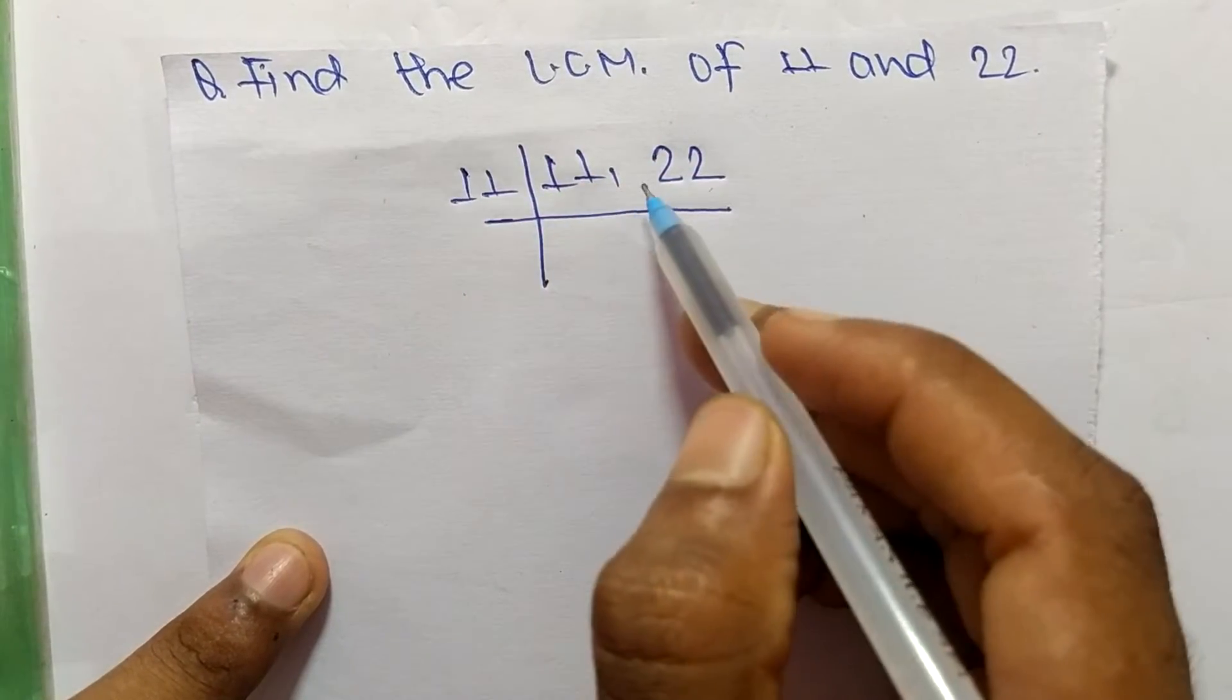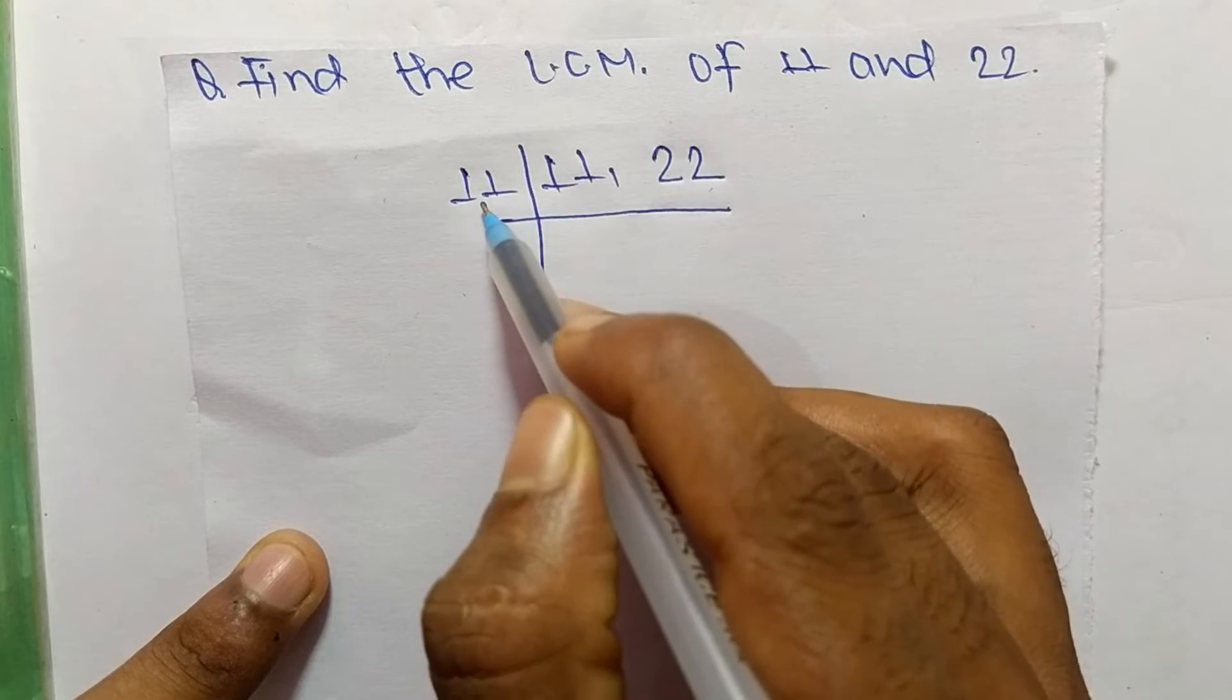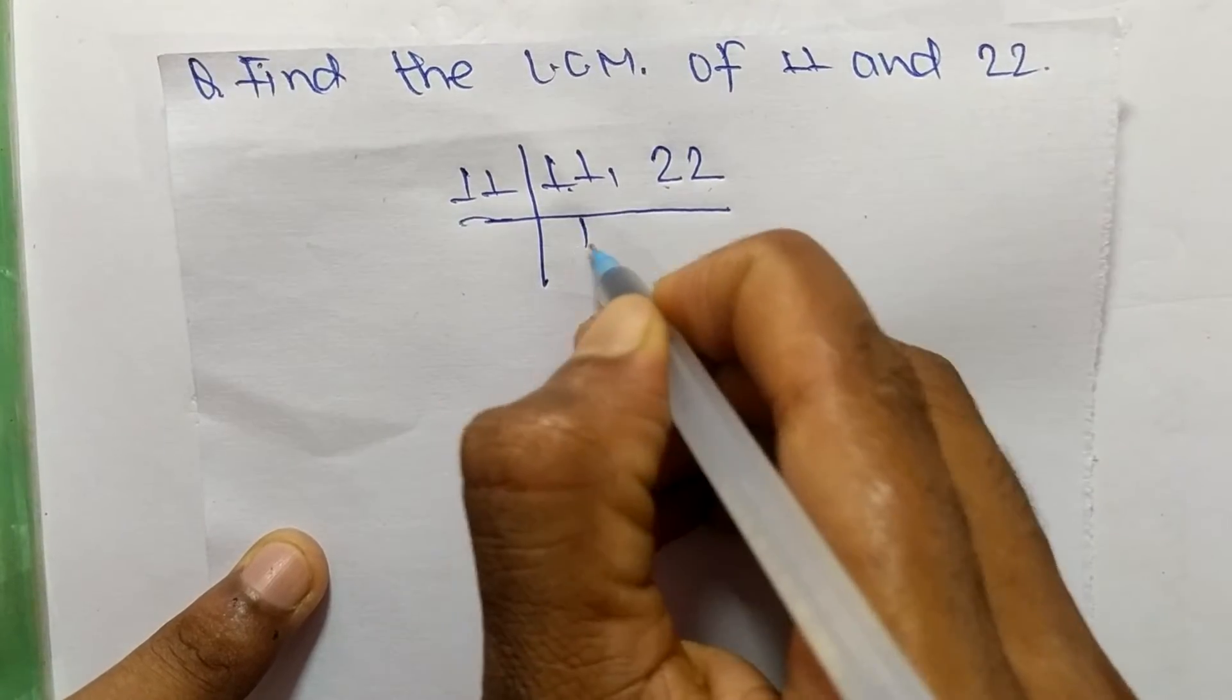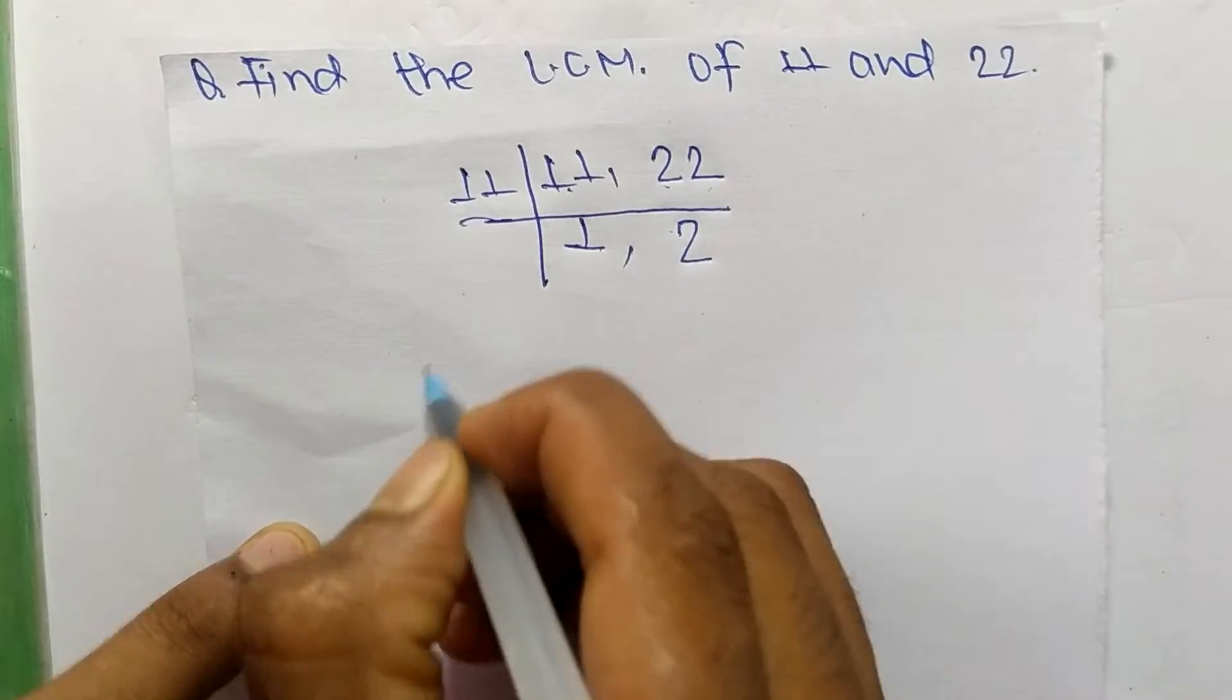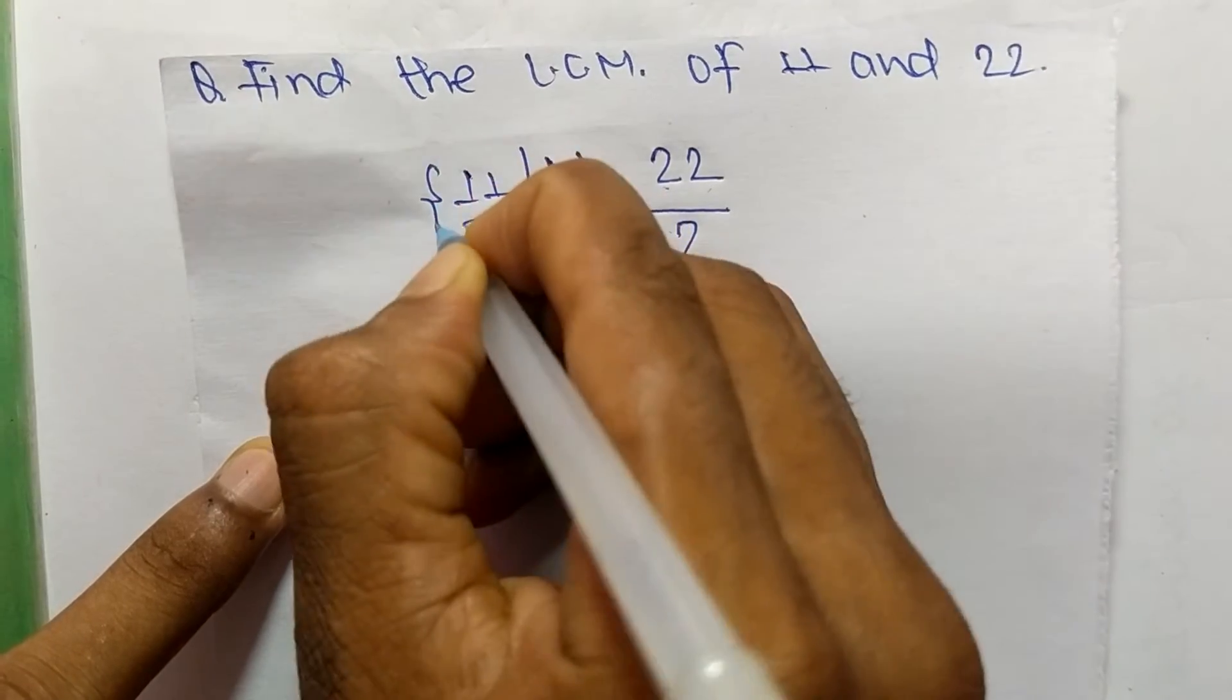If we take 2, then 2 can divide 22 but can't divide 11. But 11 can divide both numbers. So it is 11 times 1 means 11 and 11 times 2 means 22.